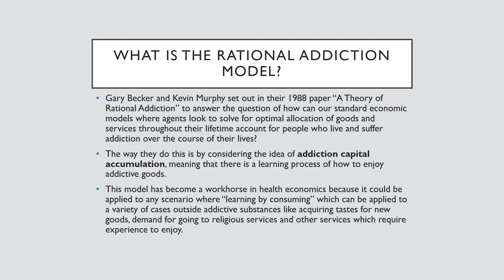Gary Becker and Kevin Murphy set out in their 1988 paper, A Theory of Rational Addiction, to answer the question of how can our standard economic models, where our agents solve optimal allocation problems of goods and services throughout their lifetime, account for people who live and suffer with addiction over the course of their lifetime. The way we do this is through considering the idea of addiction capital accumulation, meaning that there is a learning process of how to enjoy addictive goods. This model has become a workhorse in health economics because it could be applied to any scenario where there is a learning-by-consuming case, which can be applied to a variety of cases of addictive substances or cases where you need to acquire a new taste for goods, like the demand for enjoying religious services or other services which require experience for you to enjoy.